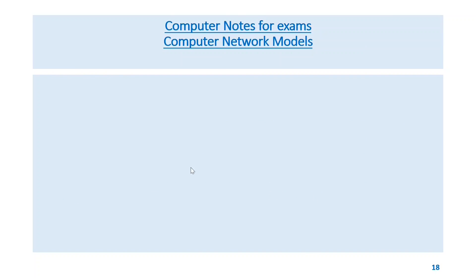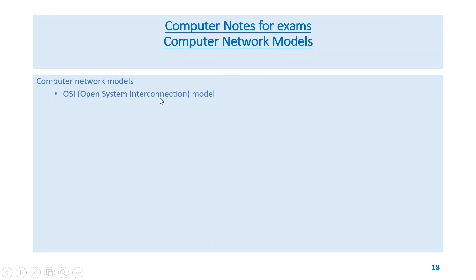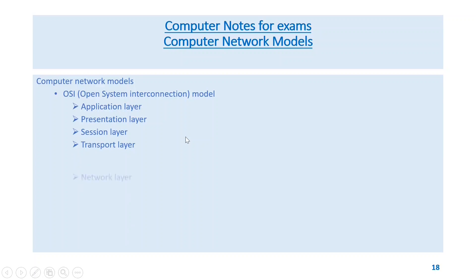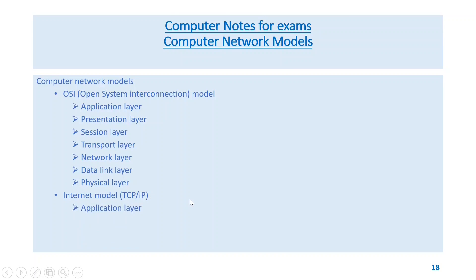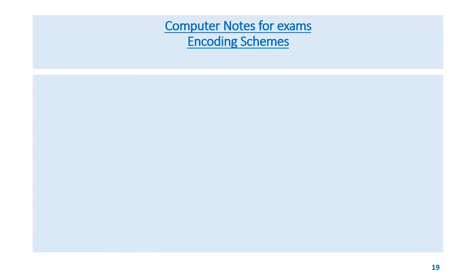Computer network models: OSI model (open system interconnection model) has application layer, presentation layer, session layer, transport layer, network layer, data link layer, and physical layer. The TCP/IP internet model has application layer, transport layer, internet layer, and network access layer.